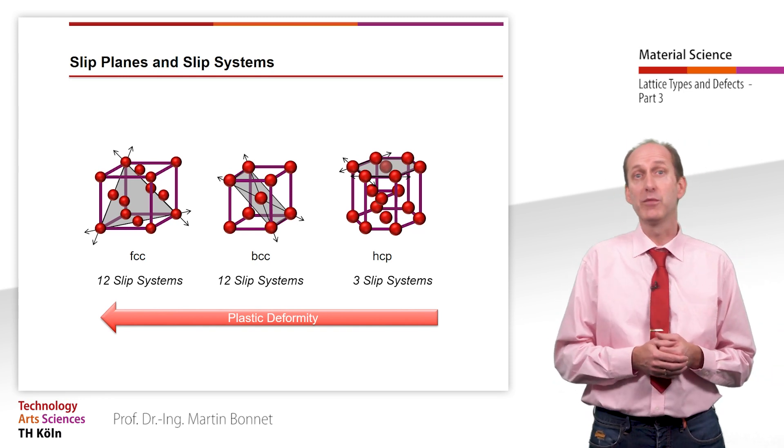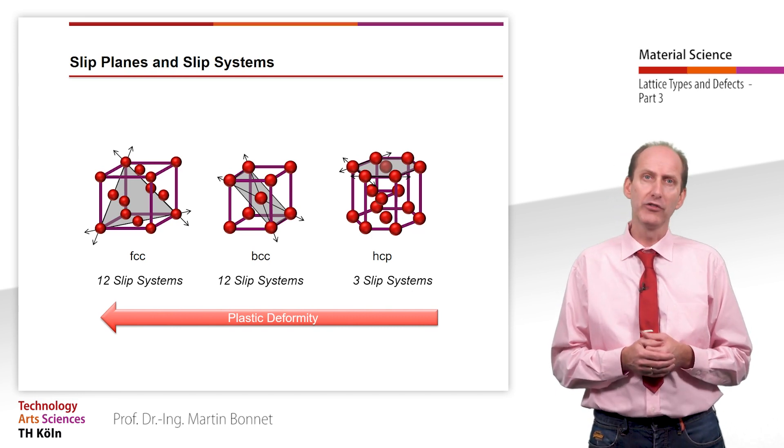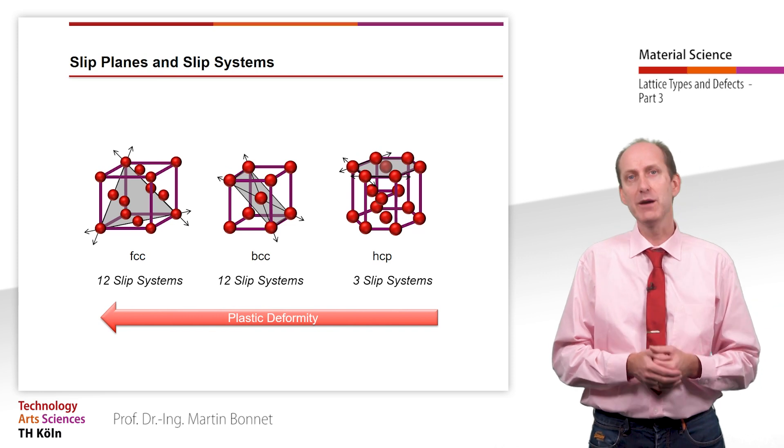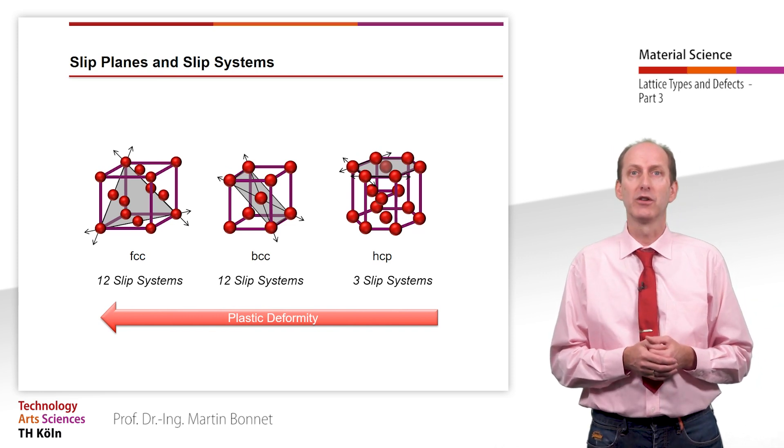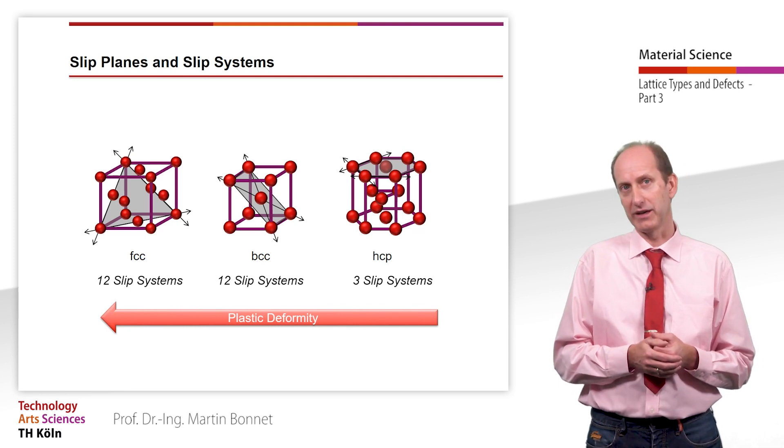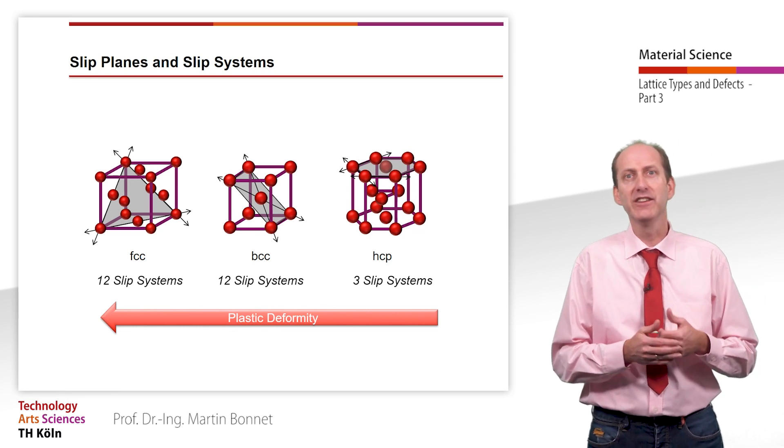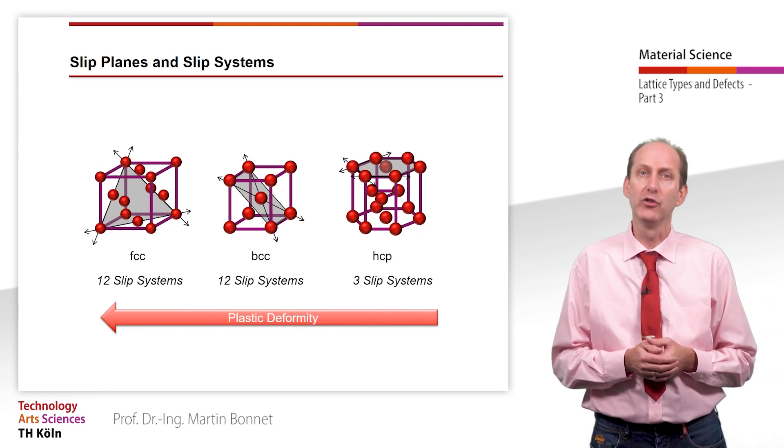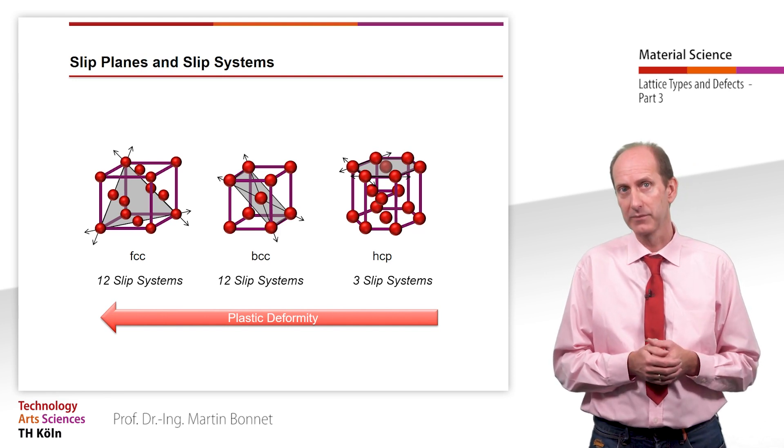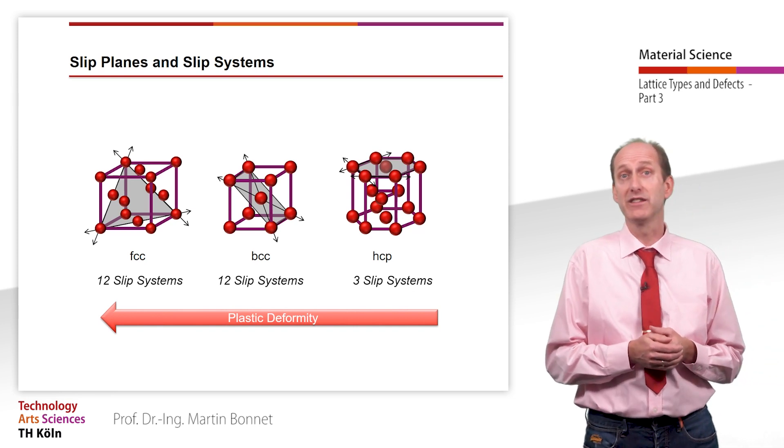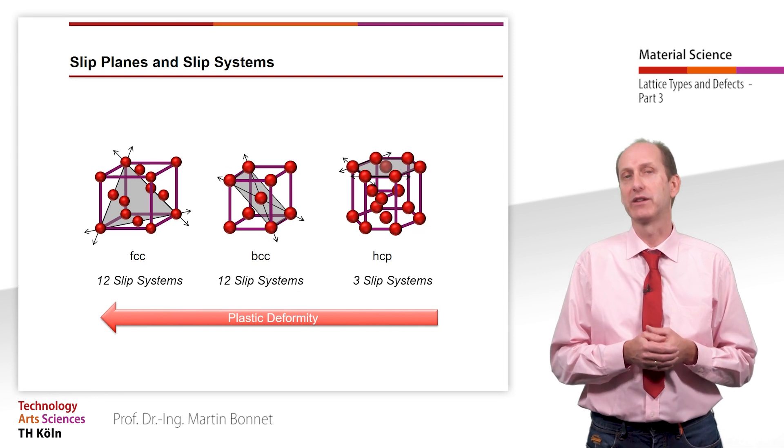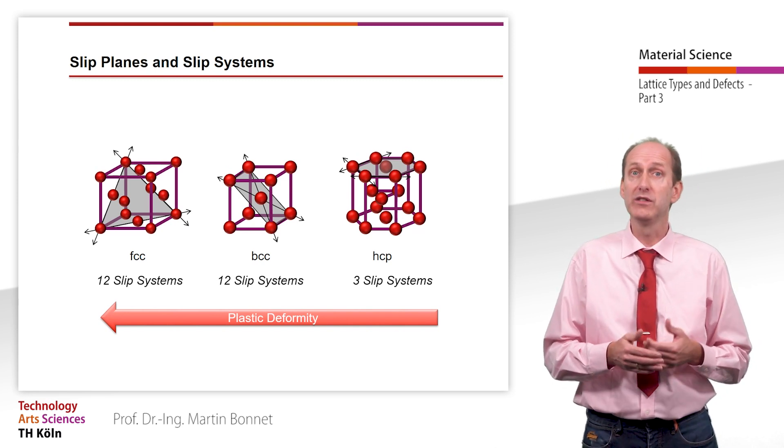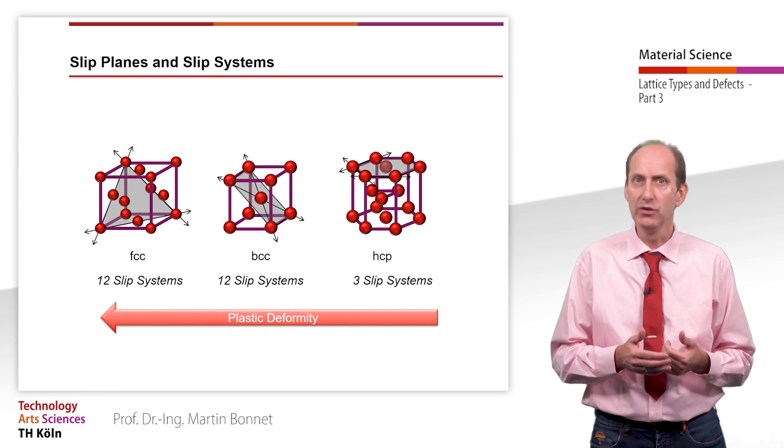As already mentioned, not only the number of slip systems is essential for good plastic behavior, but also the occupancy density is a decisive factor. Even though FCC and BCC lattices have the same number of slip systems, they differ considerably in terms of the occupancy density of their slip planes. The occupancy density is the highest possible in the FCC lattice, which makes metals with FCC lattices significantly superior to those with BCC lattices in terms of plastic deformity. The difference between FCC metals and BCC metals becomes even more obvious under temperature dependent impact stress, which you will learn about in the next video. The resistance to slip increases strongly with decreasing temperature, especially in metals that don't have closed-packed slip planes.